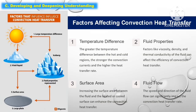The following are the factors affecting convection heat transfer. The first is temperature differences — the greater the temperature difference between hot and cold regions, the stronger the convection currents and the higher the heat transfer rate. The second is fluid properties — factors like viscosity, density, and thermal conductivity of the fluid can affect the efficiency of convection heat transfer. The third is surface area — increasing the surface area between the fluid and a heated or cold surface can enhance convection heat transfer. The fourth is fluid flow — the speed and direction of fluid flow can significantly impact the convection heat transfer rate.